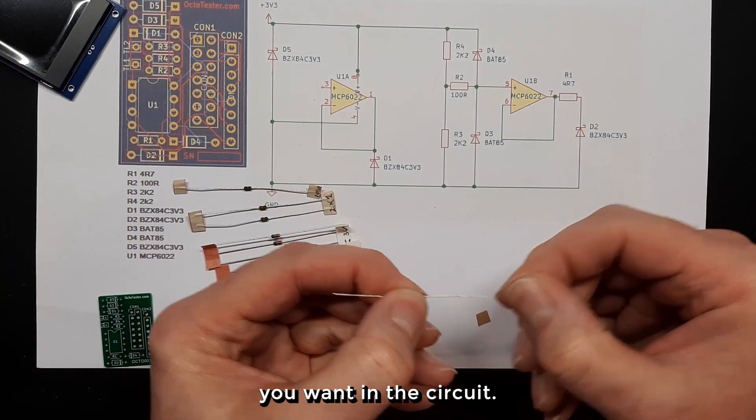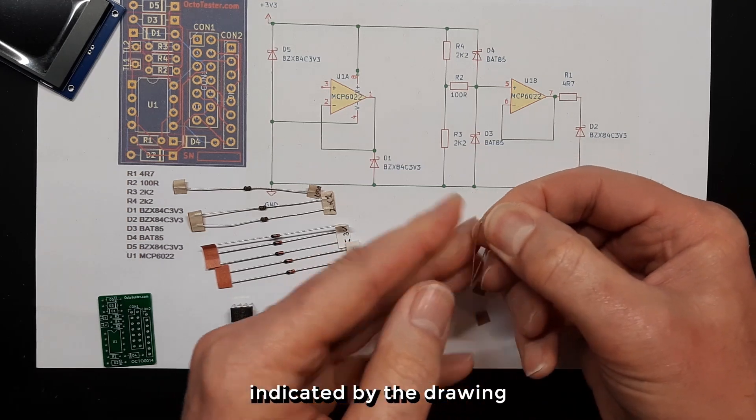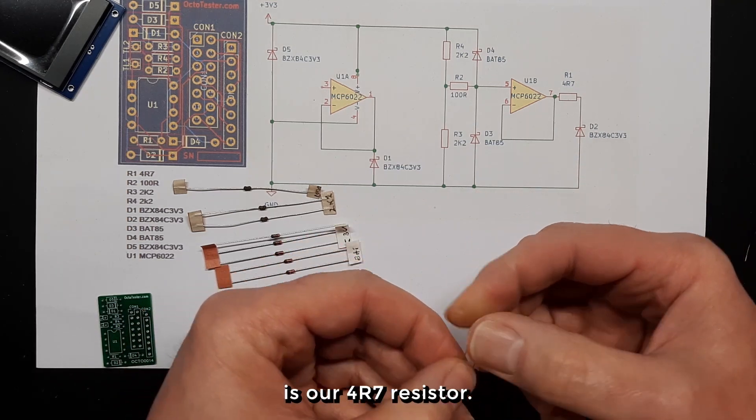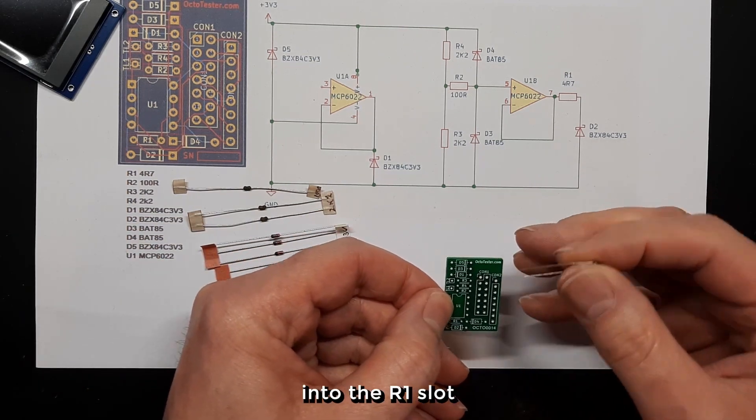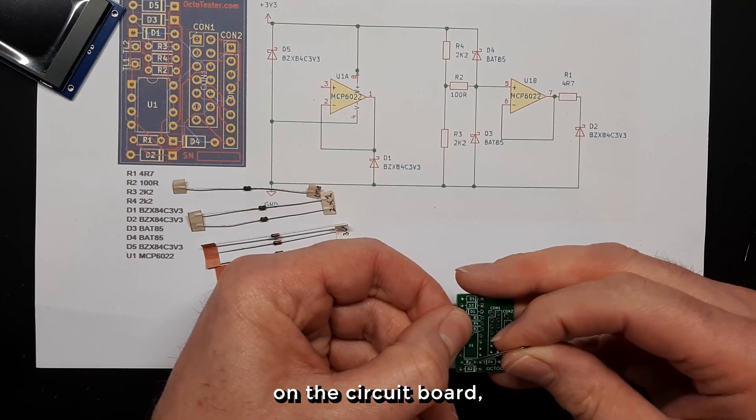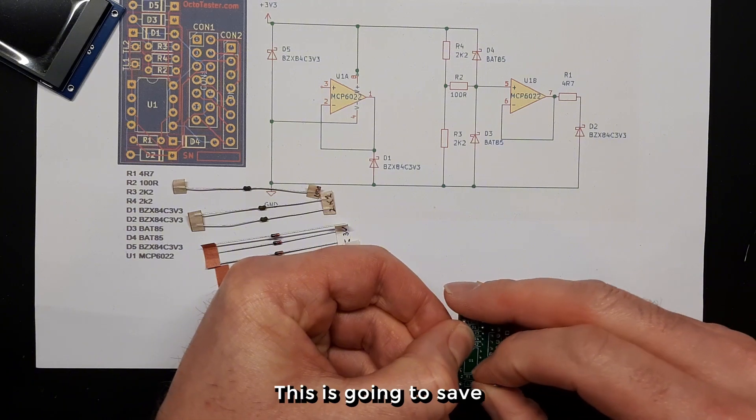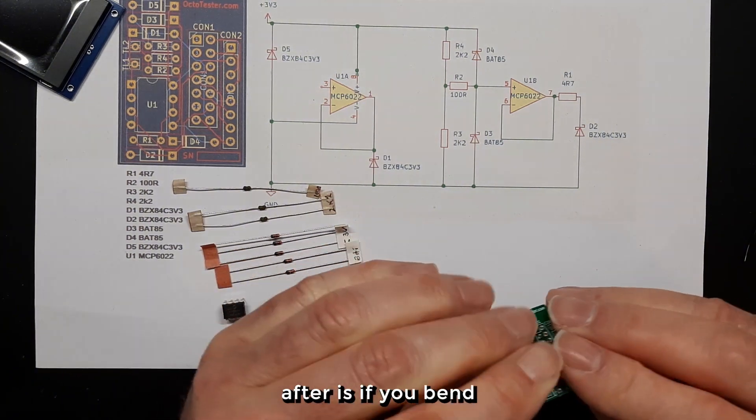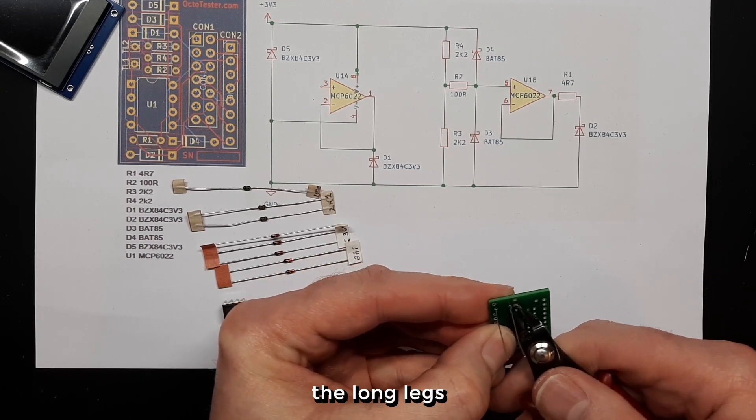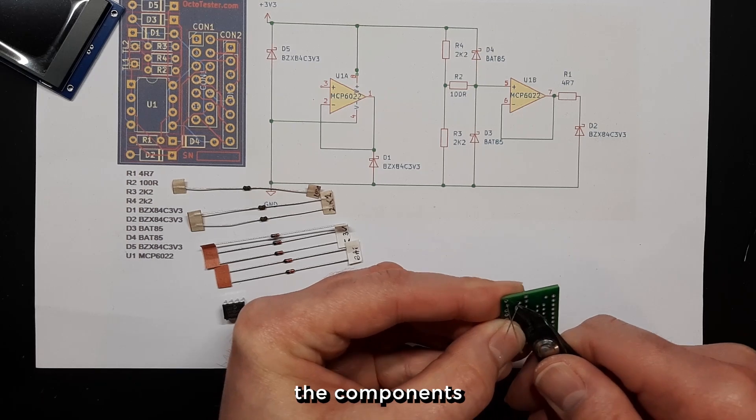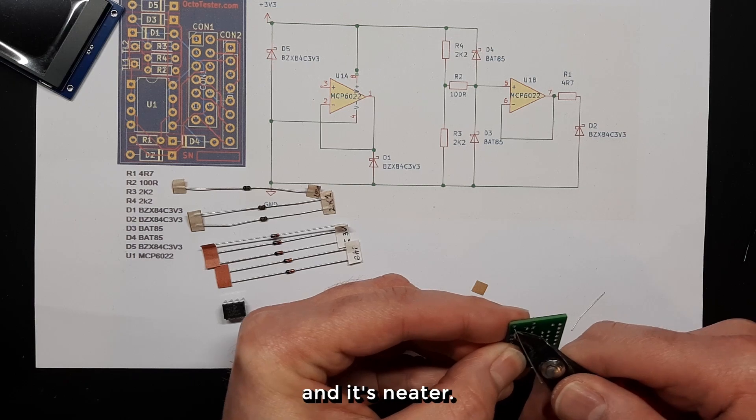You can start anywhere with what you want in the circuit. We'll start with R1. So R1, as indicated by the drawing, is our 4R7 resistor and we're going to place that into the R1 slot on the circuit board which is just underneath the IC. One useful thing to do is bend and cut the long legs of the components. The components will actually stay in the circuit board that way. There's less cutting to do after and it's neater.